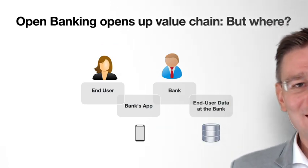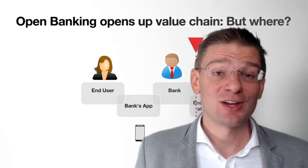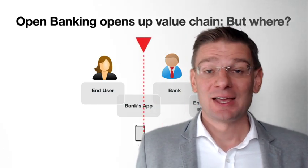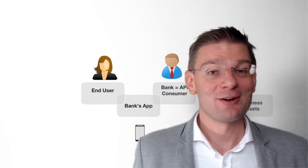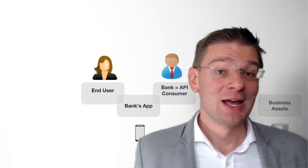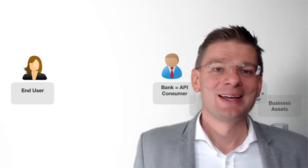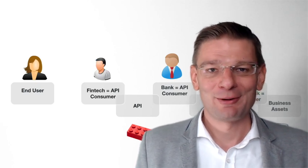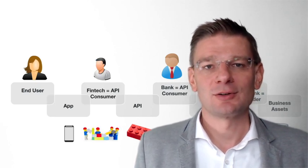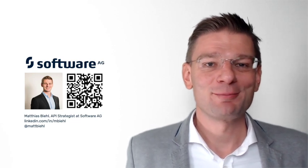So that was a quick look at the value chain and how APIs can change the value chain of a bank. APIs can make the value chain longer — longer to the left or to the right. Or you can combine those two patterns and make the value chain even longer by opening up on the left and on the right, both the front and the back. Possibilities just increase — it's all about making smart choices. Thanks a lot for watching. My name is Matthias. This video has been sponsored by Software AG.